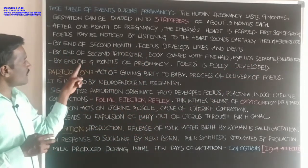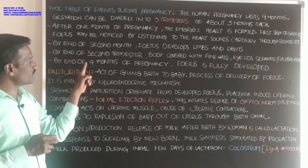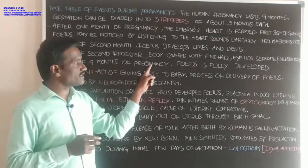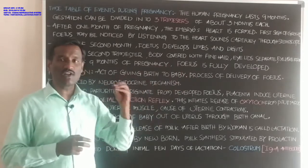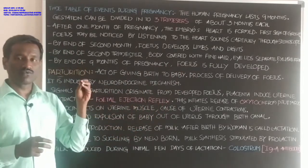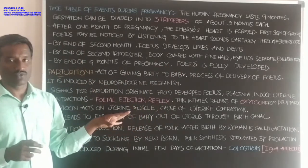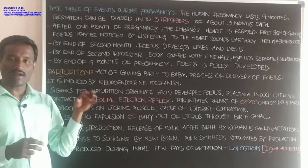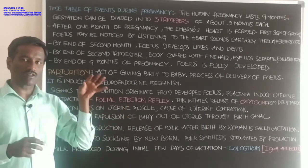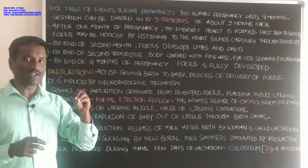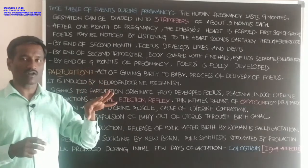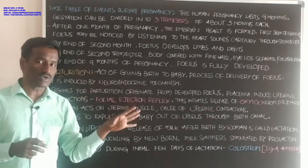By the end of 9 months of pregnancy, the fetus is fully developed and ready for parturition, or the delivery of the baby from the inner part of the uterus.